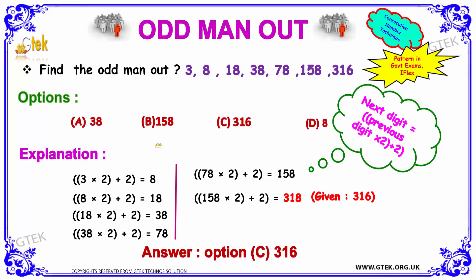You are able to see 3 into 2 plus 2 is equal to 8. The option is really simple. From here, you got 8 here. So, maybe this may be an answer or this may be an answer. 3 into 2 plus 2 is equal to 8. 8 into 2 plus 2 is equal to 18. 18 into 2 plus 2 is equal to 38.